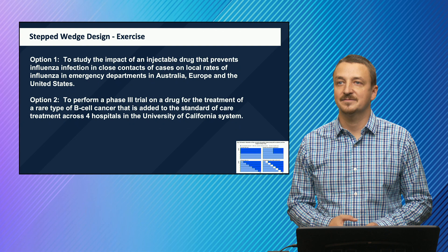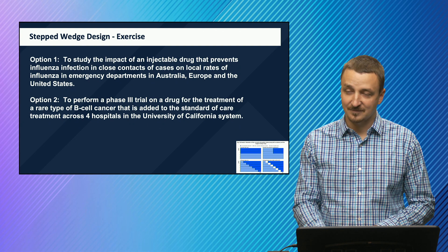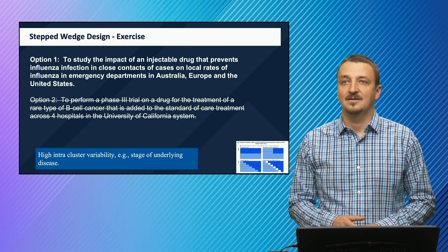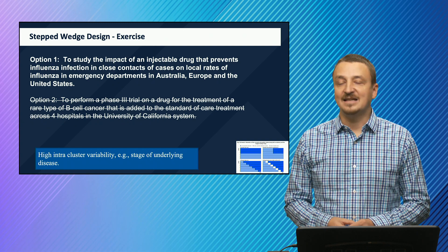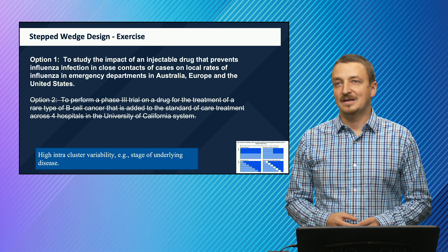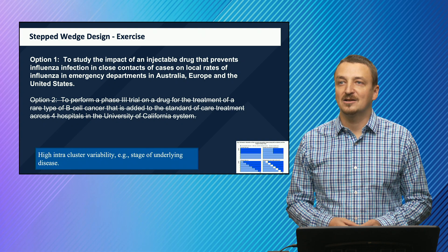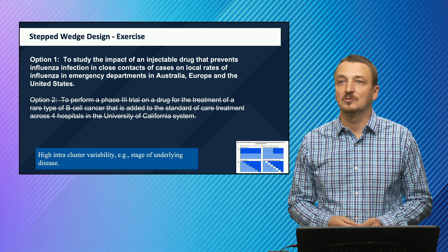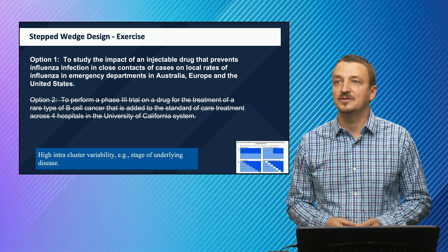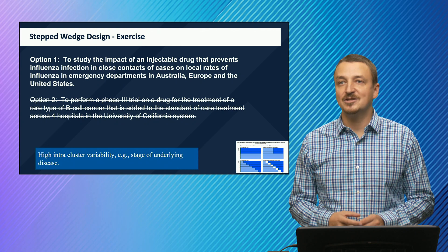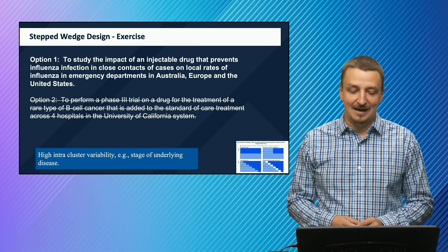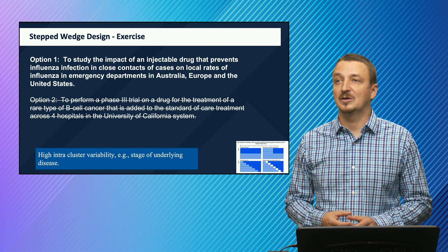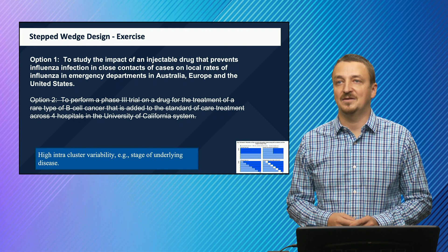The solution is option one. A stepped wedge design works well for studying the impact of an injectable drug preventing influenza infection on local rates of influenza in emergency departments across Australia, Europe, and the United States. Option two is a poorer fit because it involves a very rare disease, there may be high intracluster variability, and the stage of underlying disease may also be variable—making it not a good fit for the stepped wedge design.